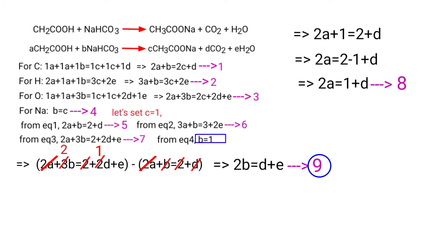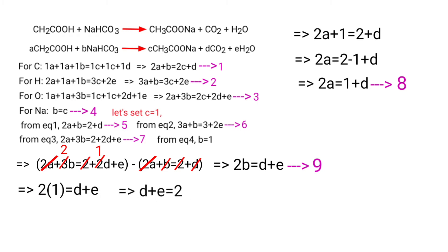Applying the B value in Equation 9: 2 times 1 equals D plus E, so D plus E equals 2. From Equation 10: D equals 2 minus E.